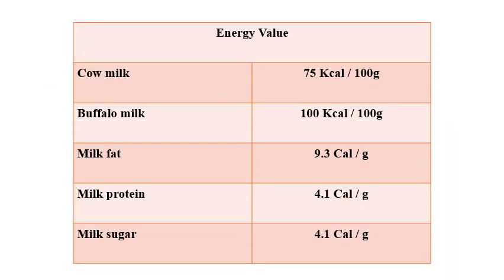Here we see the energy value in cow and buffalo milk. Cow milk provides about 75 kilocalories per 100 grams, whereas buffalo milk provides about 100 kilocalories per 100 grams, due to the higher fat percentage in buffalo milk. The energy values for constituents are: milk fat at 9.3 calories per gram, milk protein at 4.1 calories per gram, and milk sugar at 4.1 calories per gram.